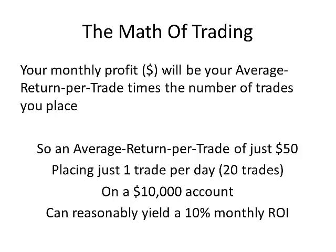And these numbers work for any size account. Reasonable risk per trade, reasonable win percentage, reasonable profit-to-loss ratio — you can make really good money if you have the opportunities and a decent system that works the way it's supposed to. Yeah, 10% monthly ROI is very reasonable. And at 10% a month, you're going to more than double your account every year. Pretty cool, huh?